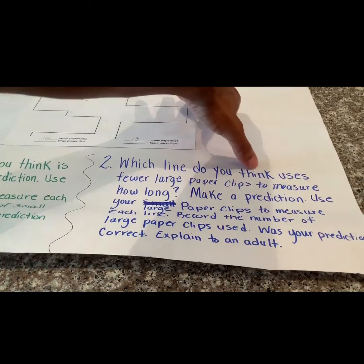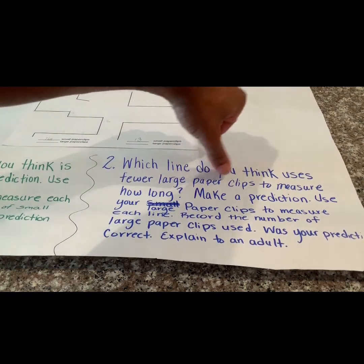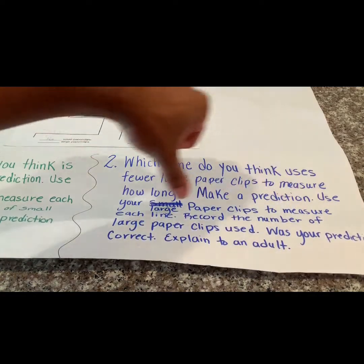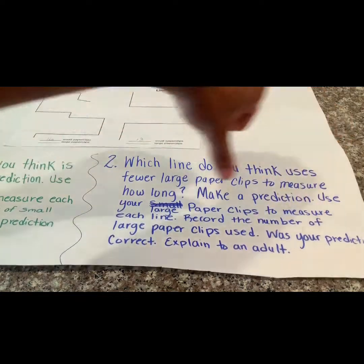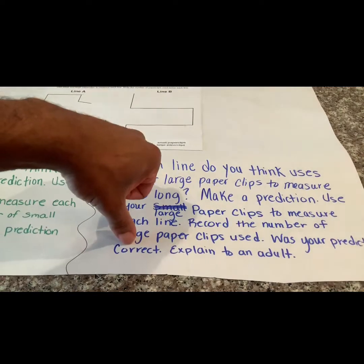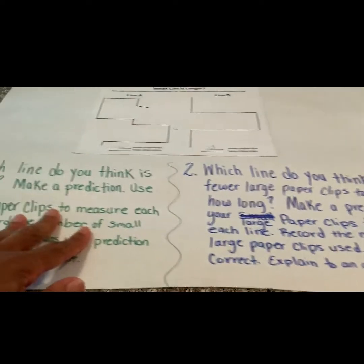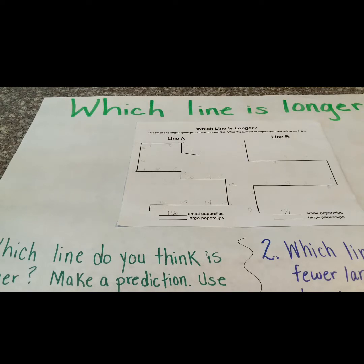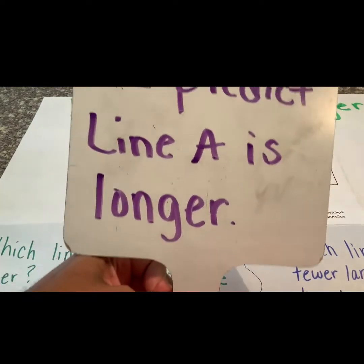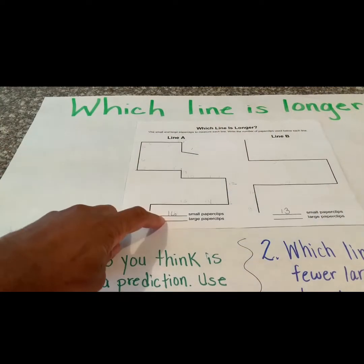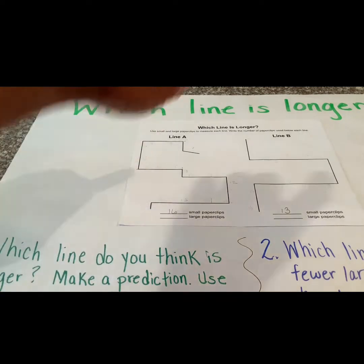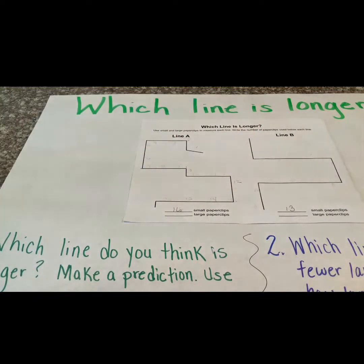Which line do you think uses fewer large paperclips to measure? Make a prediction. Use your large paperclips to measure each line. Record the number of large paperclips used. Was your prediction correct? Explain to an adult. So since I thought that line A was longer, and it shows that line A is longer because we used the most small paperclips, I'm going to assume that line B uses less paperclips. Let's see.